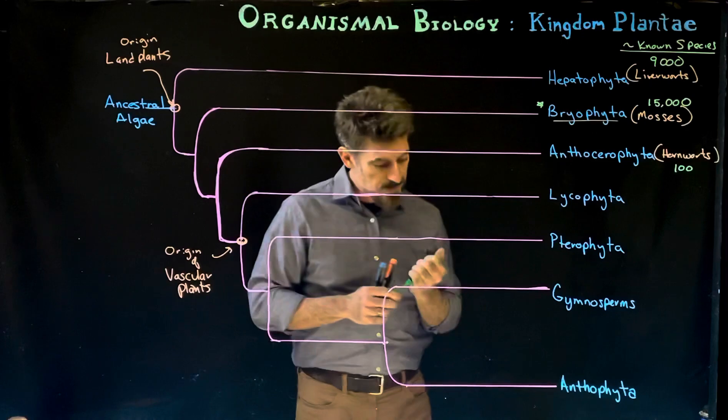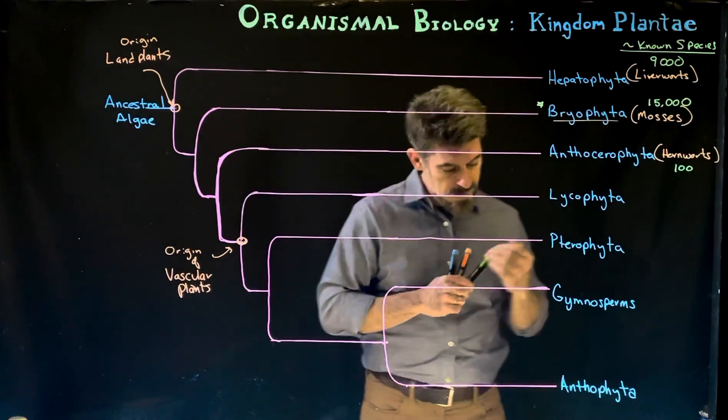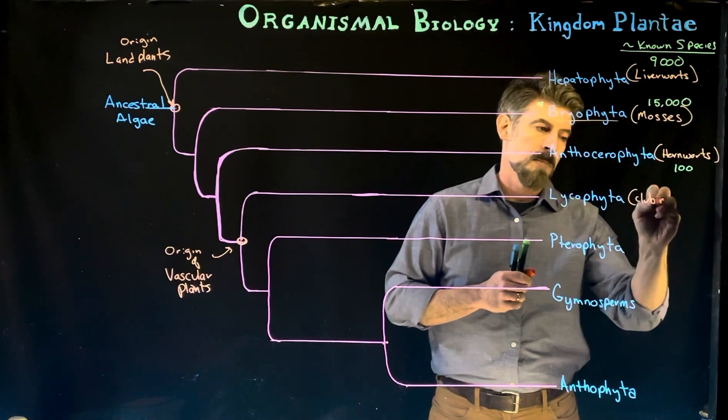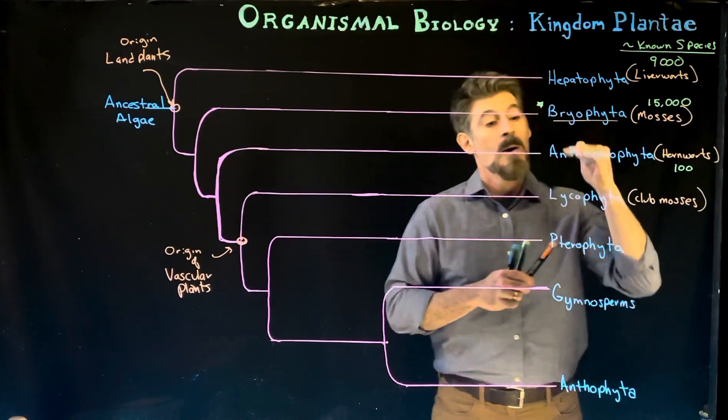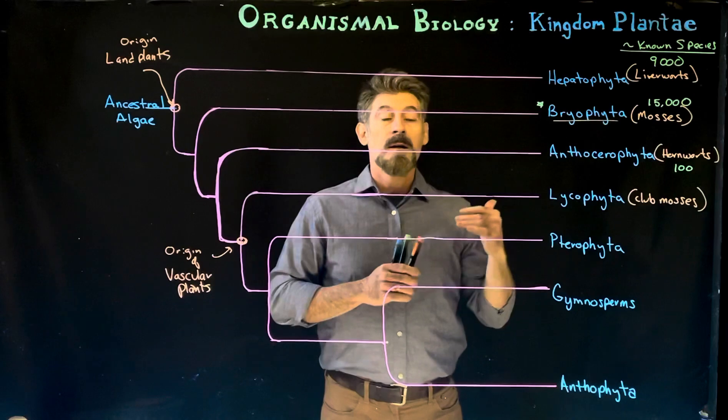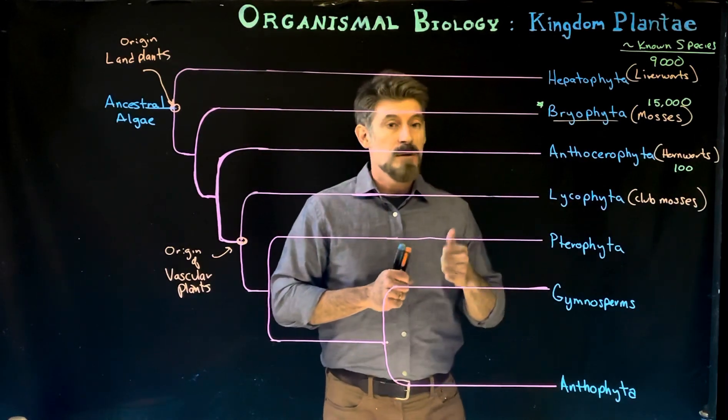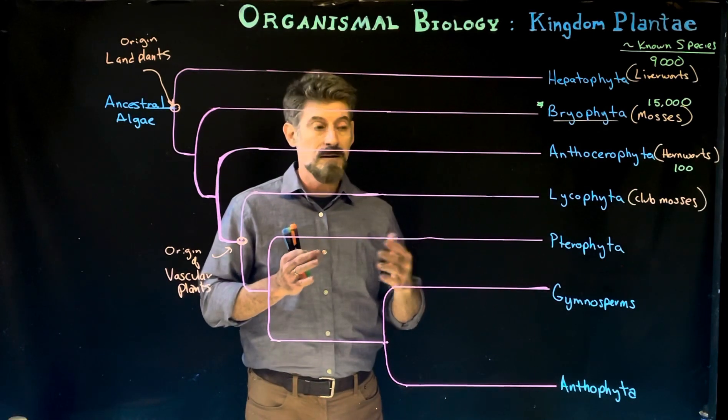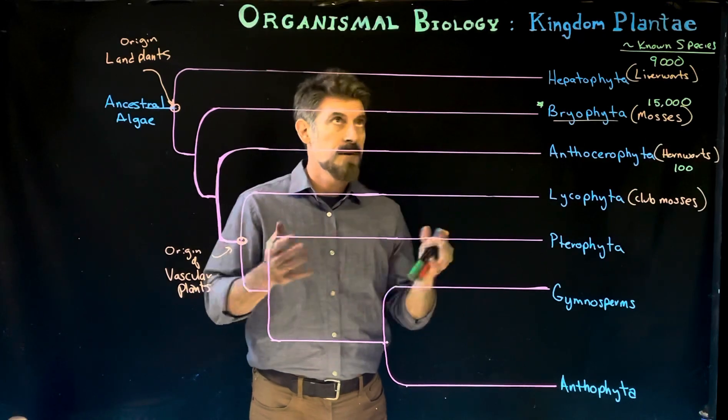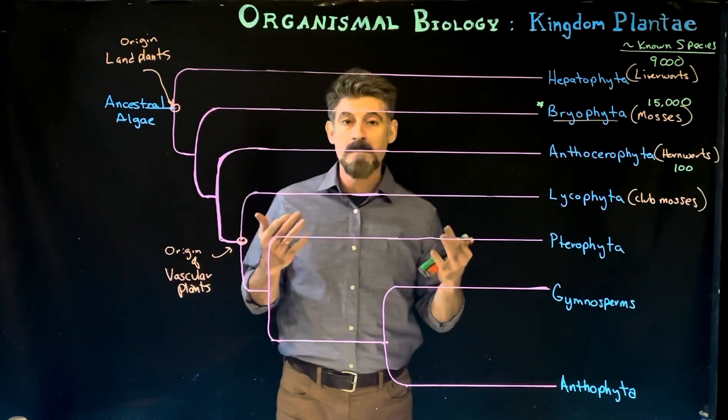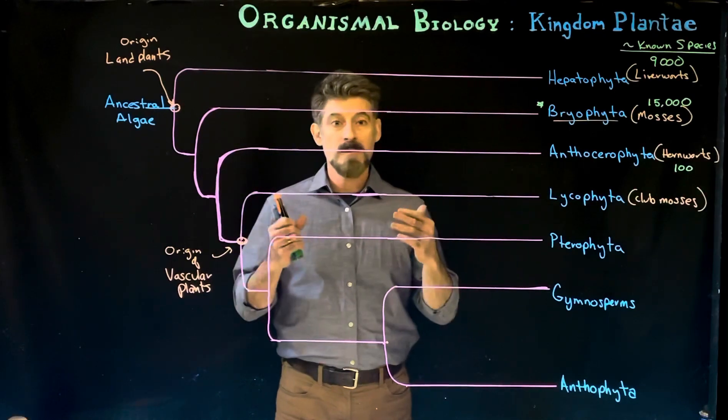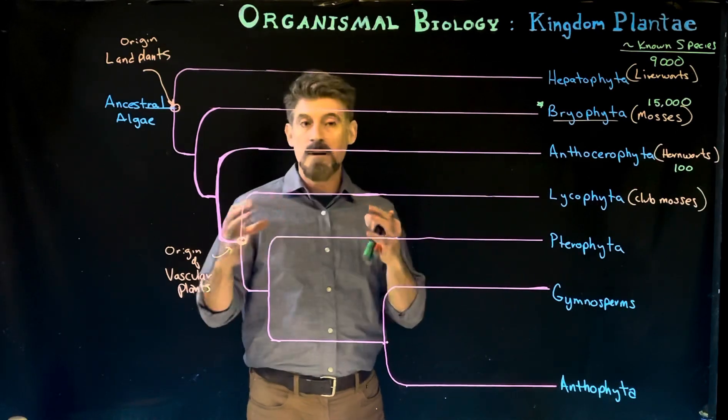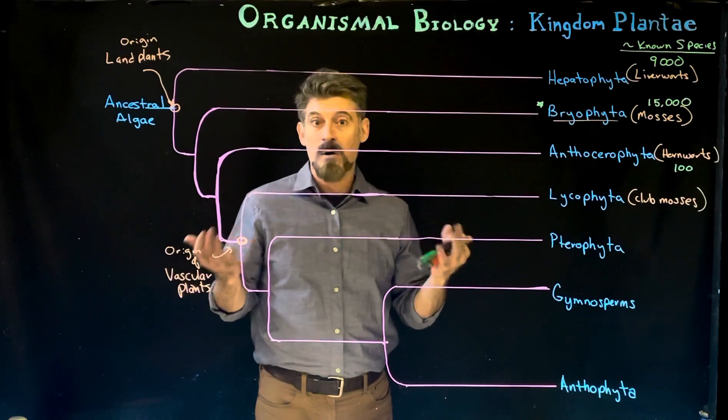Now we kind of move on to the vascular plants. We have the Lycophyta, which are the club mosses. Technically, they're not a moss. This is the problem with common terminology, like people use the term jellyfish or starfish. Those organisms aren't fish. They're invertebrate animals, very different from one another. Just because they swim, people call them fish. Again, worms. There are so many different phyla of worms.